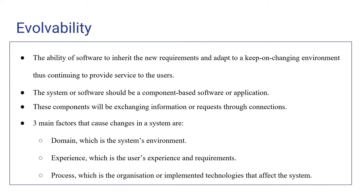The next is availability. Availability of a software or system is the ability of software to inherit new requirements and adapt to a continuously changing environment, thus continuing to provide service to users. To fulfill the availability design quality, the system should be a component-based software or application. These components will exchange information or requests through connections, and it is easier to change or update an individual component than changing the whole system.